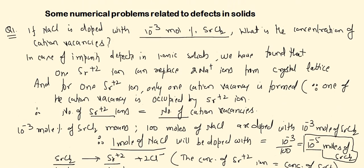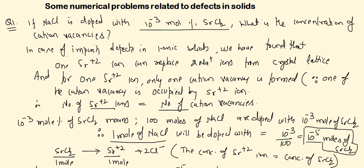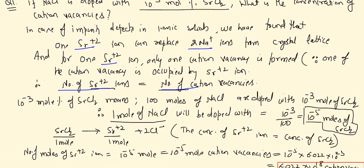To repeat: in impurity defects, for one Sr²⁺ ion, two Na⁺ ions are replaced creating two cation vacancies, but one vacancy is occupied by the Sr²⁺ ion, so only one cation vacancy remains. Since 100 moles of NaCl are doped with 10⁻³ moles of SrCl₂, for 1 mole of NaCl, SrCl₂ = 10⁻³/100 = 10⁻⁵ moles.